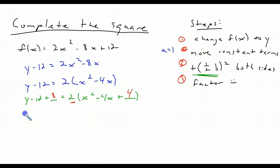And then it's just a matter of simplifying. So I have y minus 4 because negative 12 plus 8 is negative 4, and 2 times x minus 2 squared. And then just move over the 4 and change it back to f of x. So you'll have f of x equals 2 times x minus 2 squared plus 4.